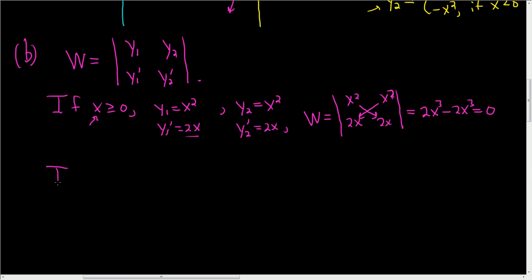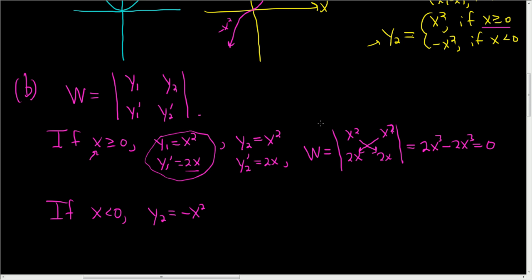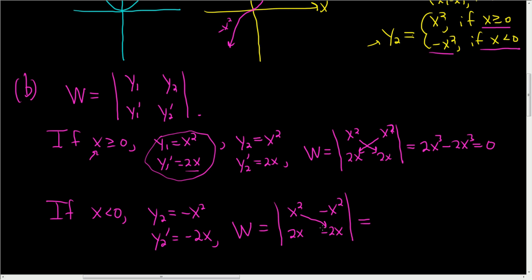Now we'll do the other piece. If x is less than 0, y1 doesn't change — it's still x squared with derivative 2x. However, y2 in this case is negative x squared, so y2 prime is negative 2x. Looking at the Wronskian, we have y1=x squared, y1 prime=2x, y2=negative x squared, y2 prime=negative 2x. Taking the determinant: x squared times negative 2x gives negative 2x cubed, minus 2x times negative x squared gives negative 2x cubed. So that's negative 2x cubed plus 2x cubed, which equals 0. So we have two functions which are linearly independent but whose Wronskian is 0.